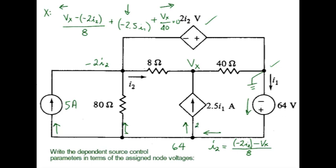This current, as we know, is 2.5i1. This current is 64 minus voltage on the other side, minus 2i2, over 80. And this current is 5 amps. My diagram is getting a little bit crowded, so I'm going to go ahead and erase this equation up here.